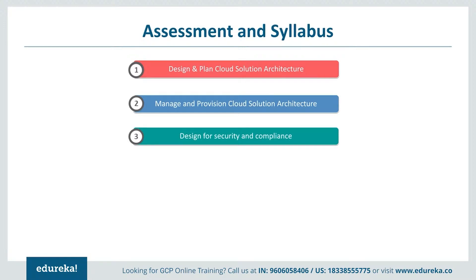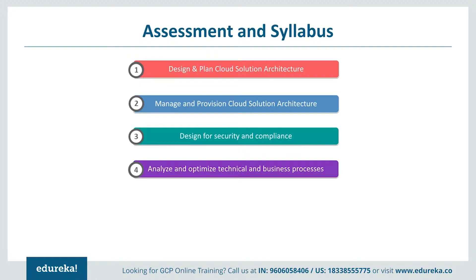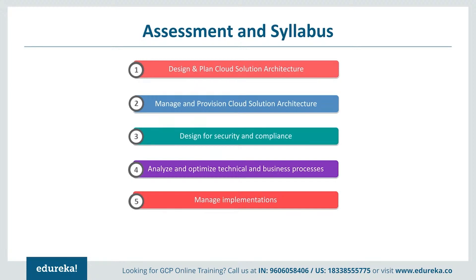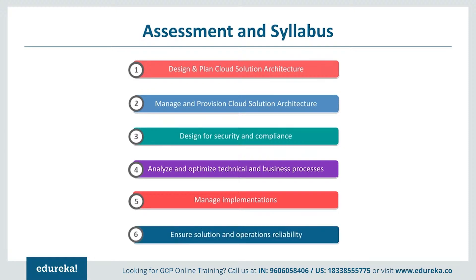Section 3 covers Designing for Security and Compliance, including identity and access management, Cloud IAM, data security, penetration testing, separation of duties (SoD), security controls, designing for legal compliance, and legislation. Section 4 covers Analyzing and Optimizing Technical and Business Processes, including the software development lifecycle, continuous integration and continuous deployment, troubleshooting, post-mortem analysis, structured testing and validation, IT enterprise processes, stakeholder management, change management, and decision-making. Section 5 is Managing Implementation — advising development and operations teams for successful solution delivery, covering application development, testing frameworks, and data and system migration tools. Section 6 covers Ensuring Solution and Operations Reliability, including monitoring, logging, alerting, deployment and release management, operational troubleshooting, and evaluating quality control measures.